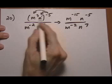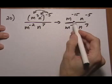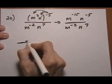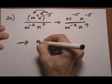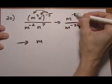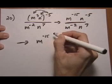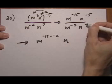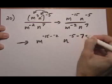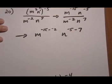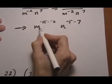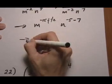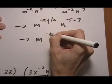Now that we've distributed and gotten rid of parentheses, we can go ahead and use the quotient rule for the same bases that we have here. So let's start with the m's. m to the, always do top minus bottom, minus fifteen minus a minus two, n to the minus five, take away seven. So that gives us, add the opposite, minus fifteen plus two, m to the minus thirteen. n to the, add the opposite, minus five and minus seven is minus twelve.